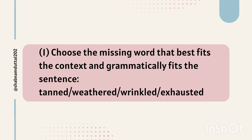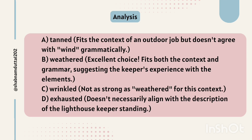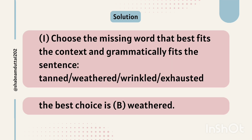Here is the question for the first blank: choose the missing word that best fits the context and grammatically fits the sentence. The options are: A. Tanned, B. Weathered, C. Wrinkled, D. Exhausted. Tanned fits the context of an outdoor job but doesn't collocate with 'wind' grammatically. Weathered is an excellent choice — it fits both context and grammar, suggesting the keeper's experience with the elements. Wrinkled is not as strong as 'weathered' for this context. Exhausted doesn't align with the description of the keeper standing. Therefore, the best choice is B. Weathered.